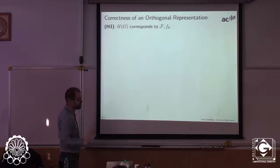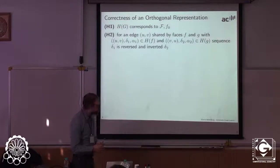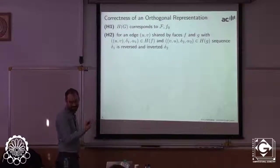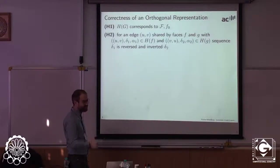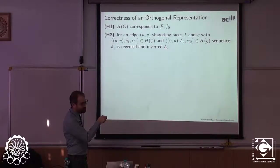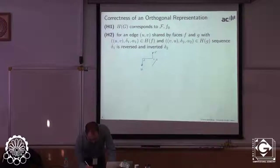To verify a valid orthogonal representation, it must correspond to the face structure of the given embedding. Also, since an edge is shared by exactly two faces, if edge uv has string delta1 in face f, then the opposite edge vu with string delta2 in face g requires that delta1 is the reversed and inverted sequence of delta2 — you see the same bends in opposite order and opposite turn direction from the other face.